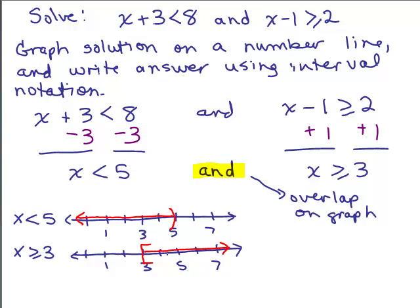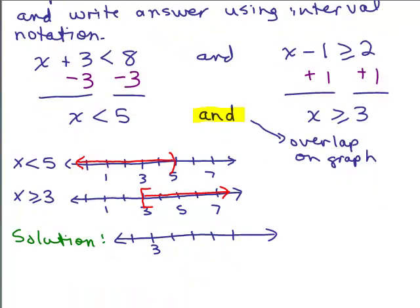Look at this carefully — where is the overlap? The smallest number they both have in common is 3. I can't go to the left of 3 because it won't be in the second set. And the biggest number is almost up to 5 — all the numbers up to 5. So the graph solution is in between 3 and 5. And in interval notation, the answer is written as bracket 3 comma 5 parenthesis, representing in between 3 and 5.